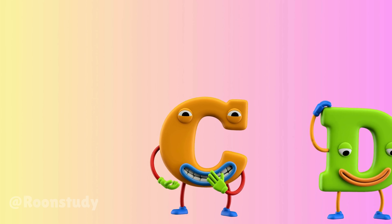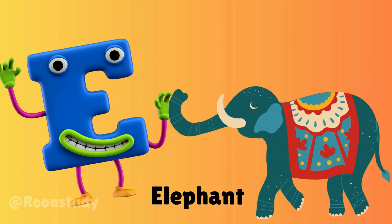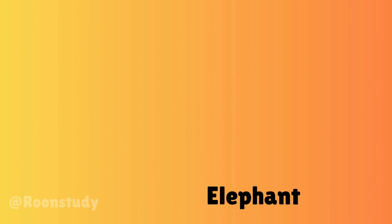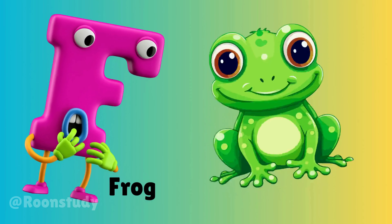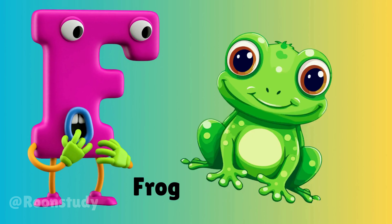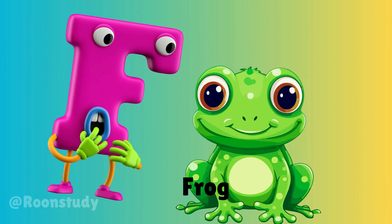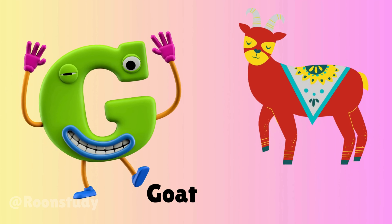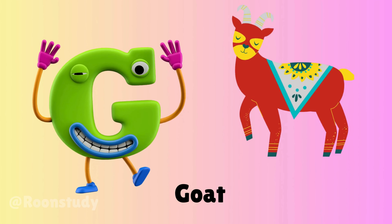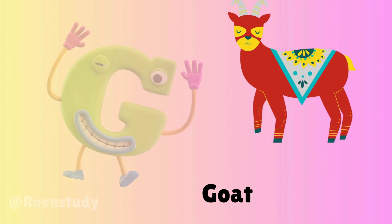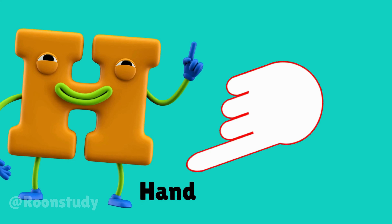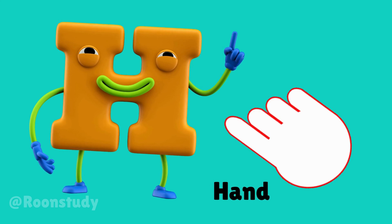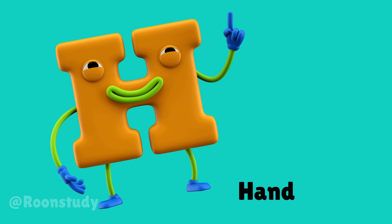E is for elephant, e-e-elephant. F is for frog, f-f-frog. G is for goat, g-g-goat. H is for hand, h-h-hand.